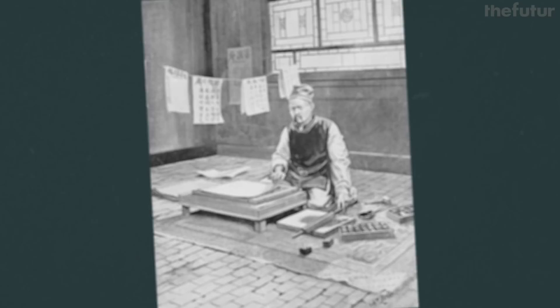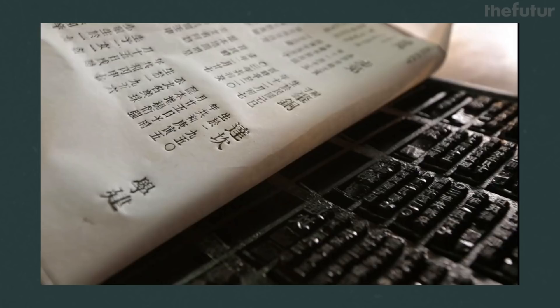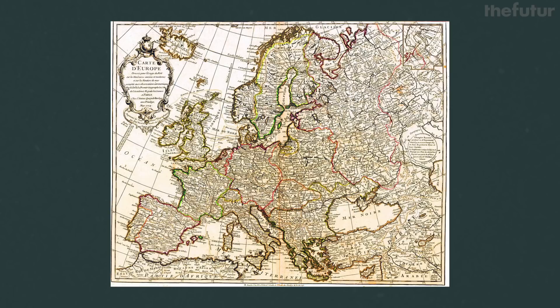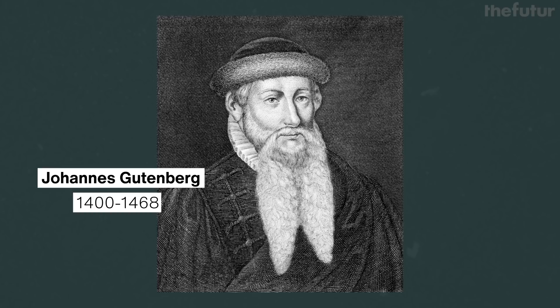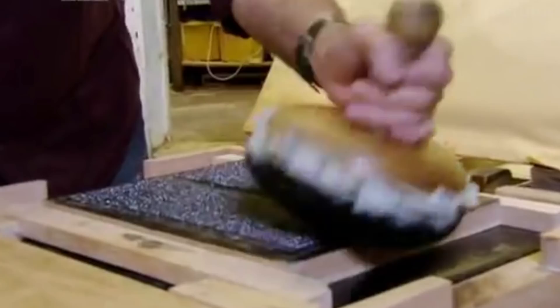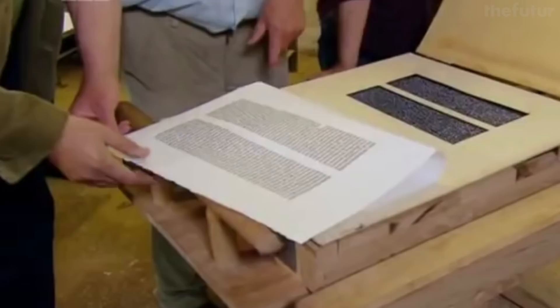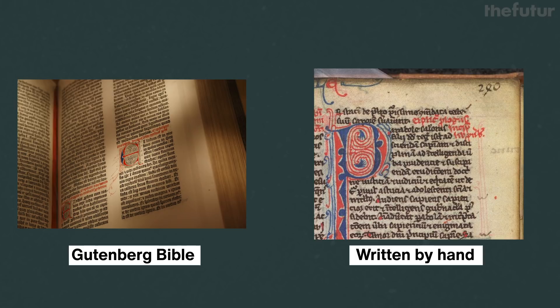The way we think about typefaces today was not how it has always been. Moveable type goes back to 1040 AD in China, but the first repeated typefaces for the masses was created in the 1450s by Johannes Gutenberg in Mainz, Germany. The first typefaces were meant to look hand-drawn, to imitate the scribes.